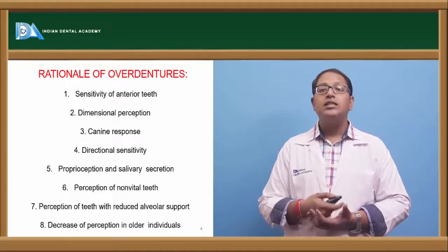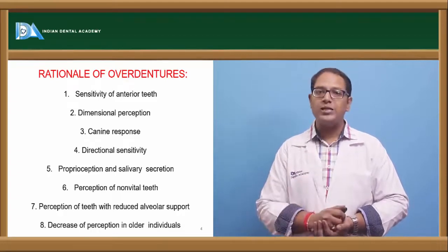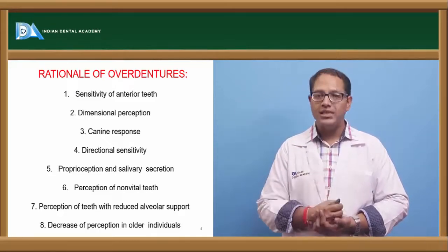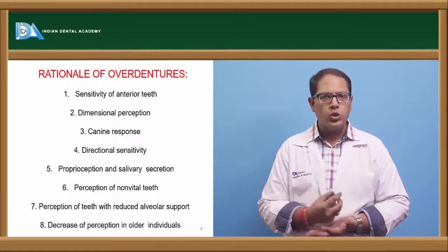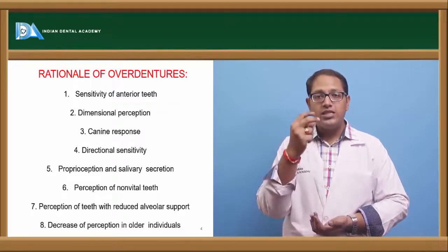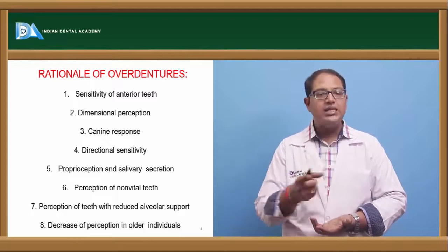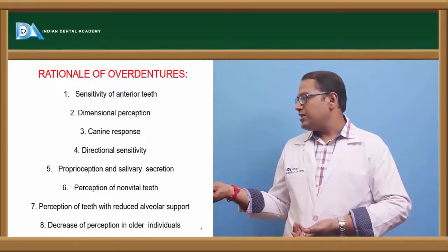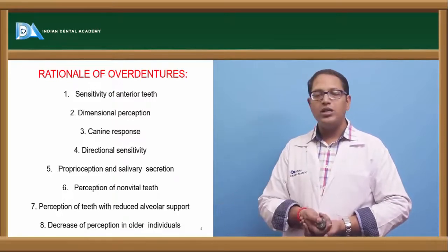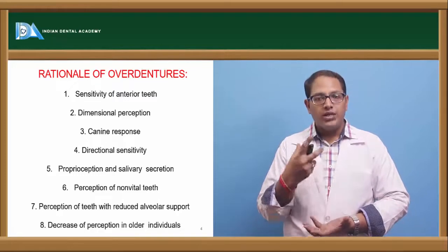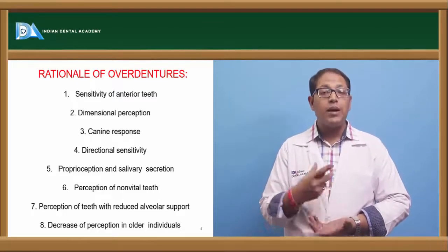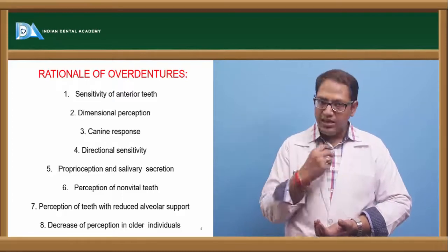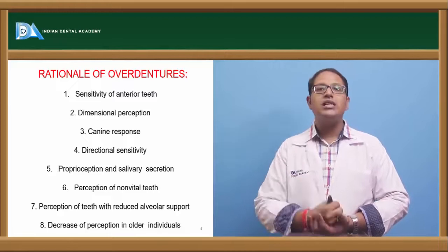Studies have found that it is not just vital teeth that provide proprioception — non-vital teeth also help in proprioceptive activity. Even though there is no nerve or blood vessel, the periodontal ligaments remain intact, so signals can still be passed through the periodontal ligaments to our brain, maintaining proprioception. Overdenture is important also because the bundle bone starts resorbing immediately when a tooth is extracted. By preserving the teeth, we preserve the bundle bone and decrease the rate of resorption, preserving the ridge.